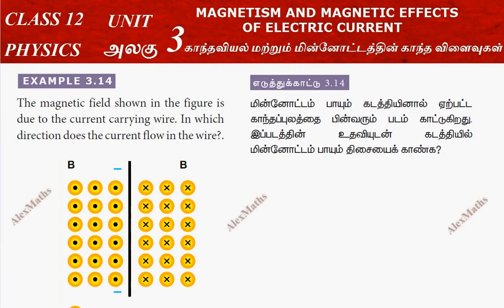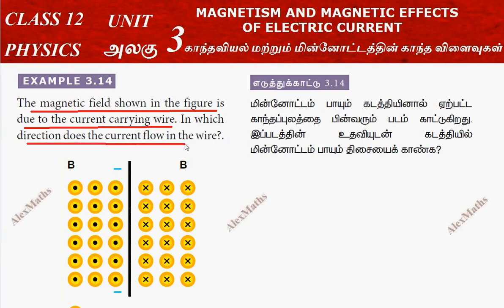Hi students, this is Alex here. Example 3.14. The magnetic field shown in the figure is due to the current-carrying wire. In which direction does the current flow in the wire?